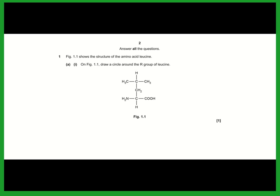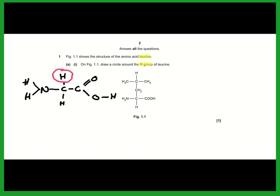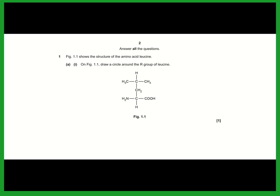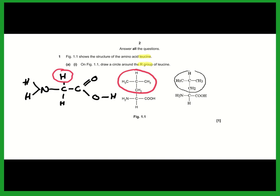Question 1 begins with a relatively simple question about amino acid structure. They show the structure of amino acid leucine and ask you to draw a circle around the R group. Amino acids all have the same structure: an amine group containing nitrogen, a central carbon, a carboxylic acid group, and an R group — one of 20 groups in humans. The simplest amino acid is glycine, which has a hydrogen as its R group. For leucine, the R group is the side chain, and the examiner wanted you to draw a circle around it.